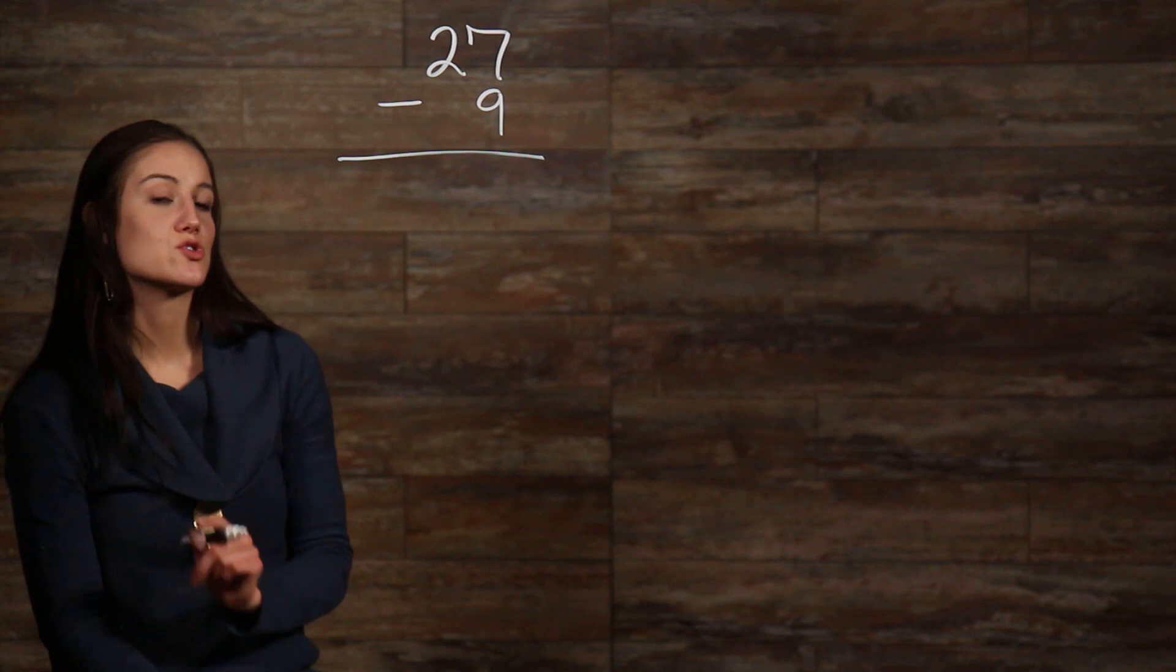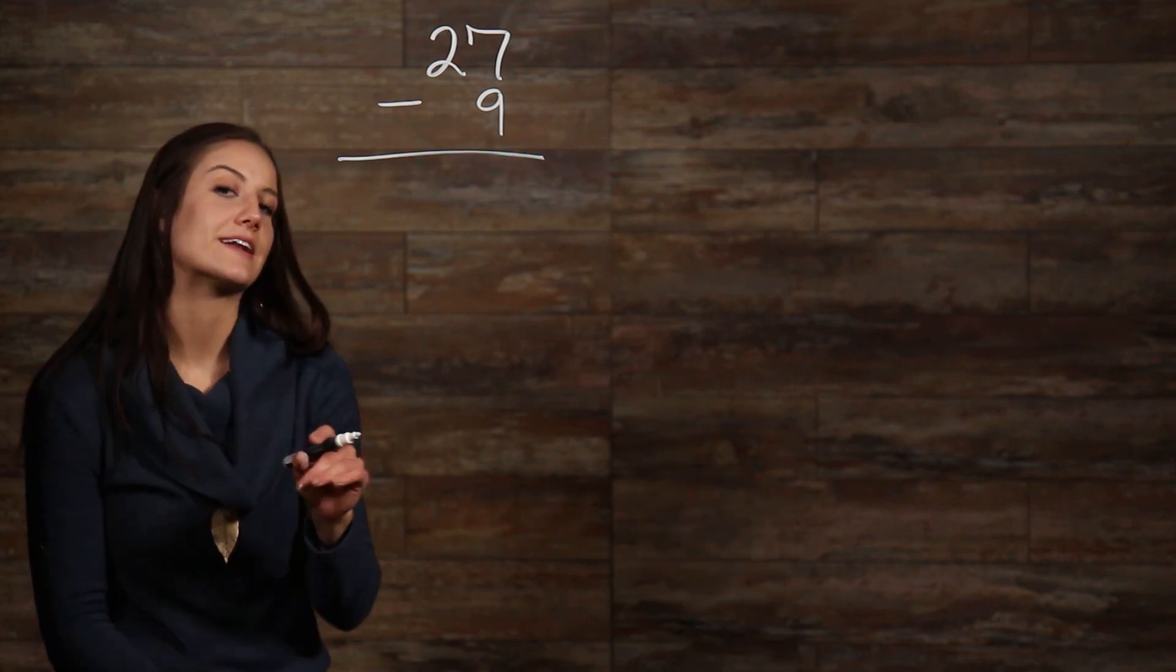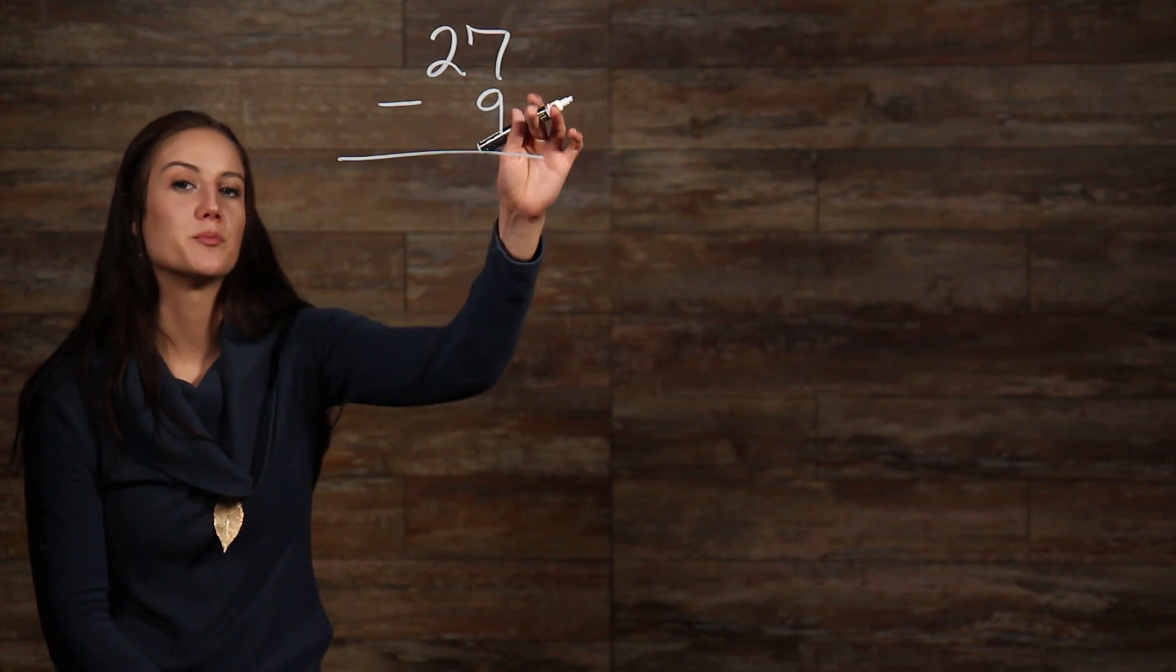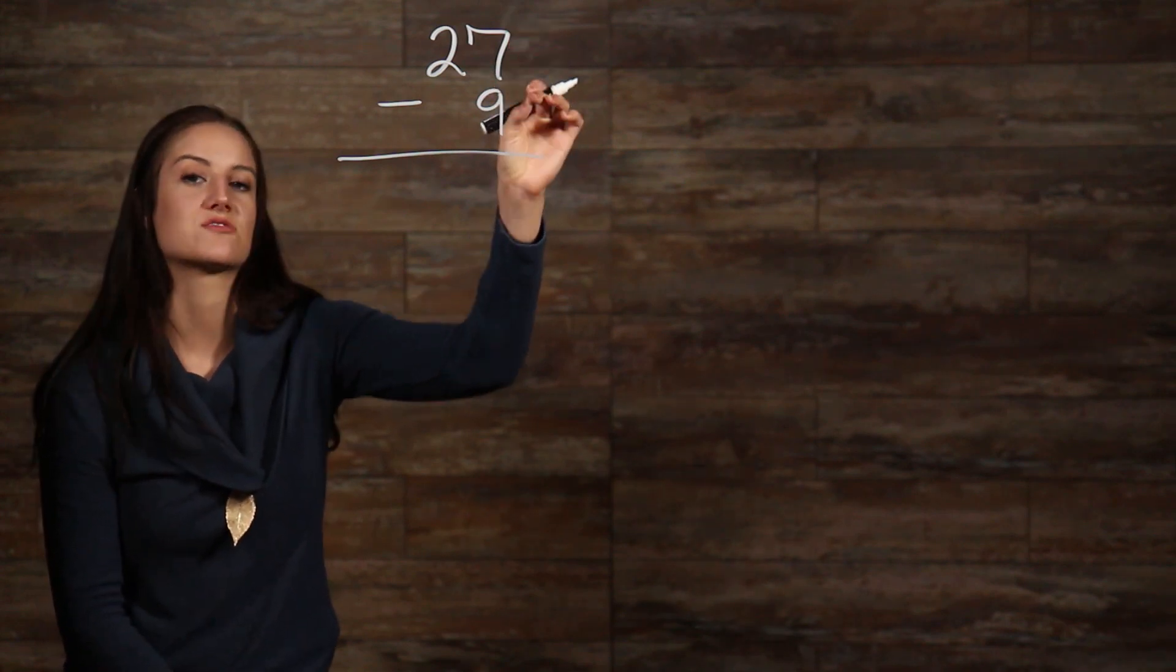Now, the first thing you need to make sure of when subtracting large numbers is that your number places are lined up correctly. For instance, in our example here, 7 and 9 are both in the ones place, so they need to be lined up directly across from one another.